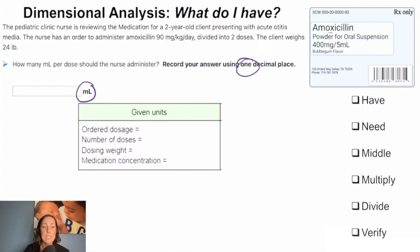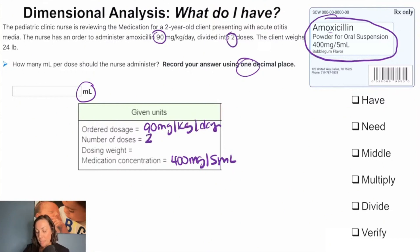What we're trying to solve for is our milliliters that we're trying to give. We can ask ourself, what do we have? We are holding this powdered suspension in our hands, this amoxicillin, and we see that there's 400 milligrams per 5 mL on this label. We have some knowns: our ordered dose is 90 milligrams per kilogram per day, we know that we're giving it in two doses, and our dosing weight is 24 pounds, which we're gonna have to convert to kilograms.